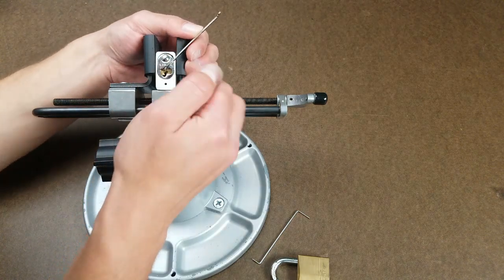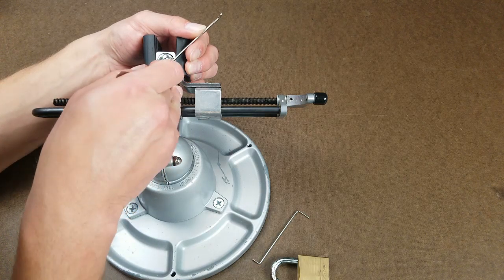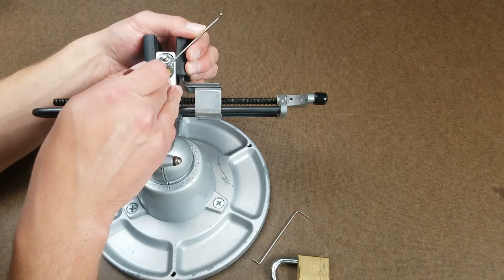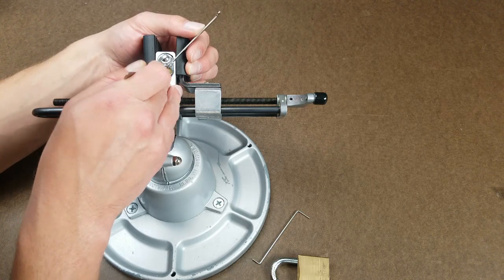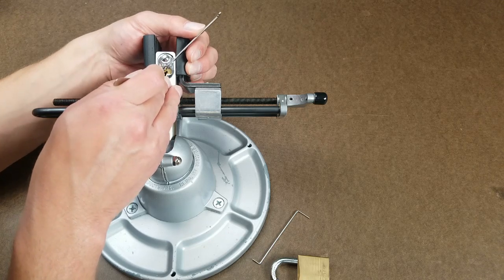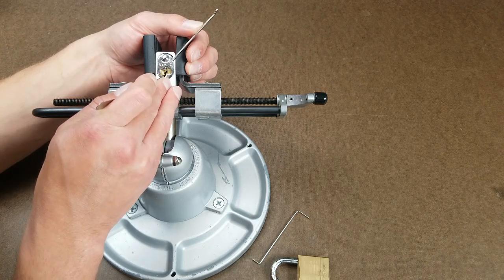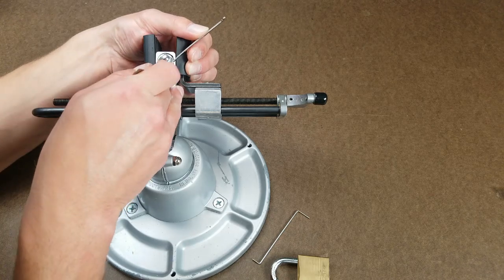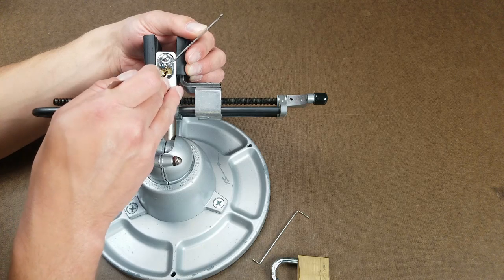What I mean by binder is whatever element, pin, slider, whatever it is that is currently bound. And what I mean by bound is it's stuck, it doesn't move. The whole process of picking is dependent upon your ability to find the binder. And tension is how you create binders. A lock in its normal state will have nothing bound up. Everything will be sprung and loose, and that's how it has to be so that the key can enter and move things to the right height. So you have to apply tension to the lock so that pins get bound, and you can feel the bound pins, and you can move them out of your way and past the shear line.